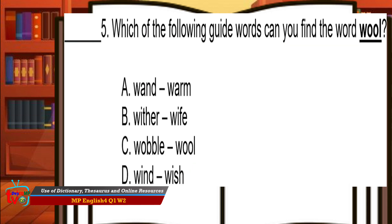Which of the following guide words can you find the word wool? Yes! The answer is letter C — it can be found between the words wobble and wool. Good job! So how many did you get from the activity? Great! I know that you can do the other activities in your learning activity sheet on your own.